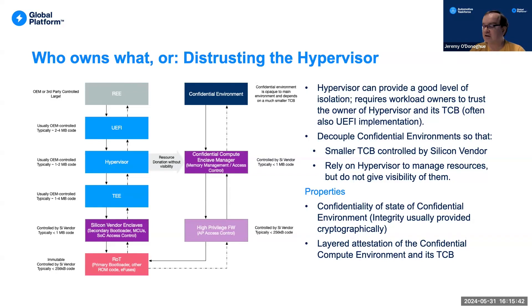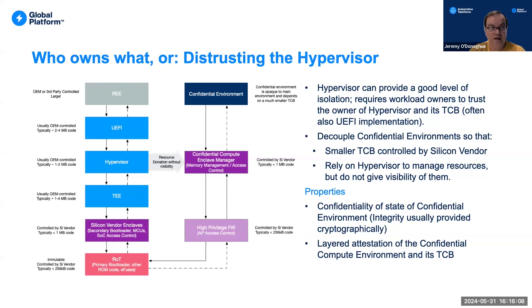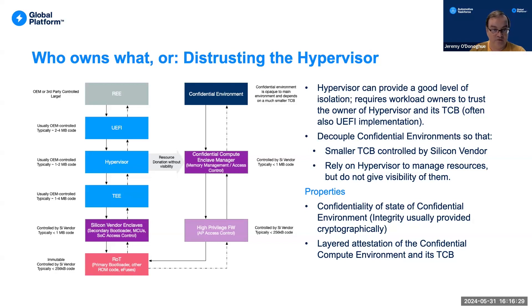One way to do this is to have the hypervisor in one world and the confidential environment in a different world. On an ARM system, the hypervisor most likely runs in non-secure EL2, and the confidential compute enclave management — what ARM calls the Realm Management Monitor, or RMM — runs in Realm EL2, a separate world. When memory is donated from the hypervisor to the confidential world, the hypervisor no longer has access to it: it manages but cannot see. That allows a confidential environment that depends on a smaller trusted computing base — probably some high-privileged firmware and the enclave manager — usually controlled by the silicon vendor.